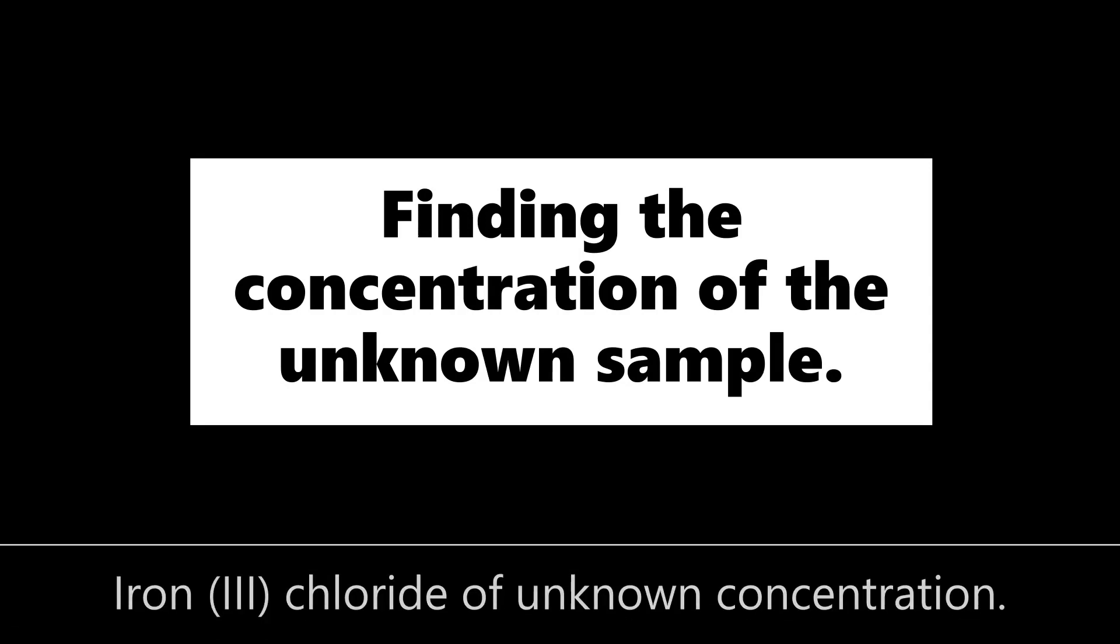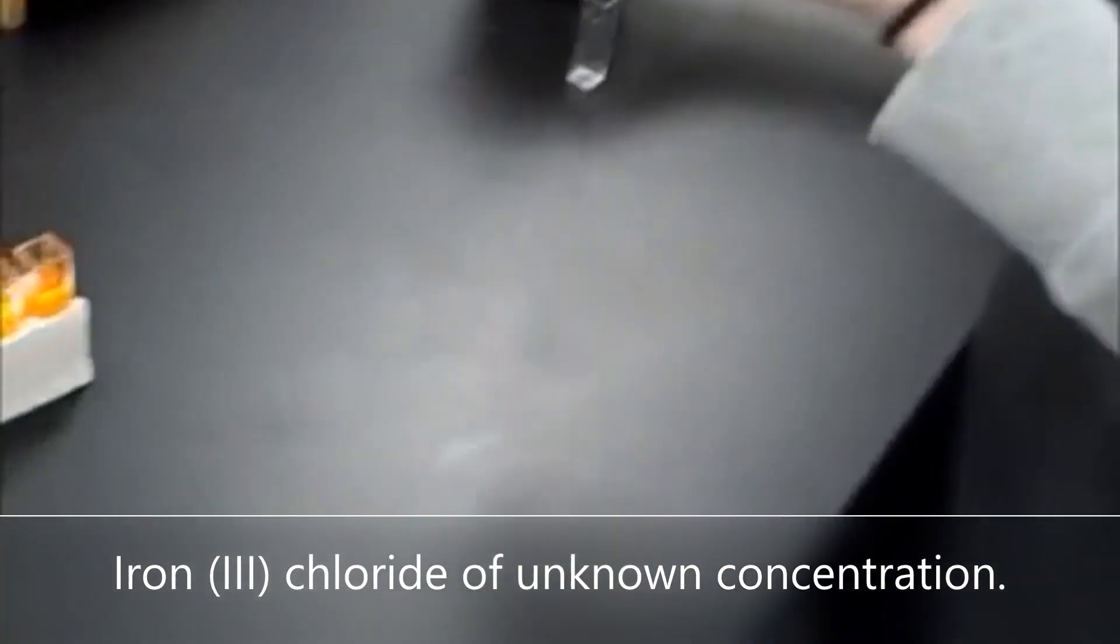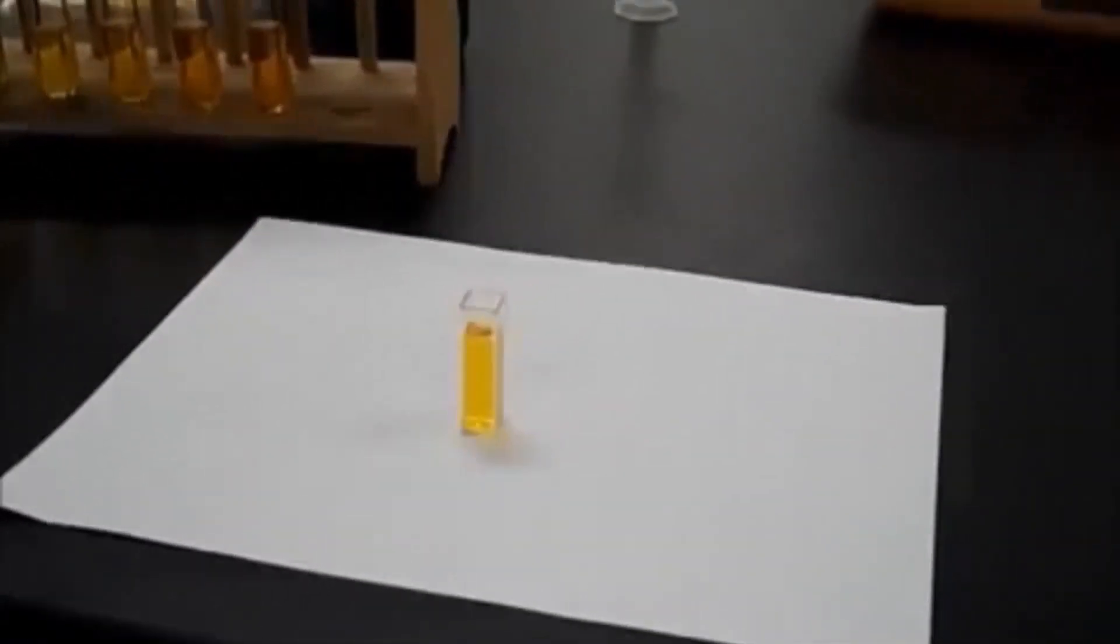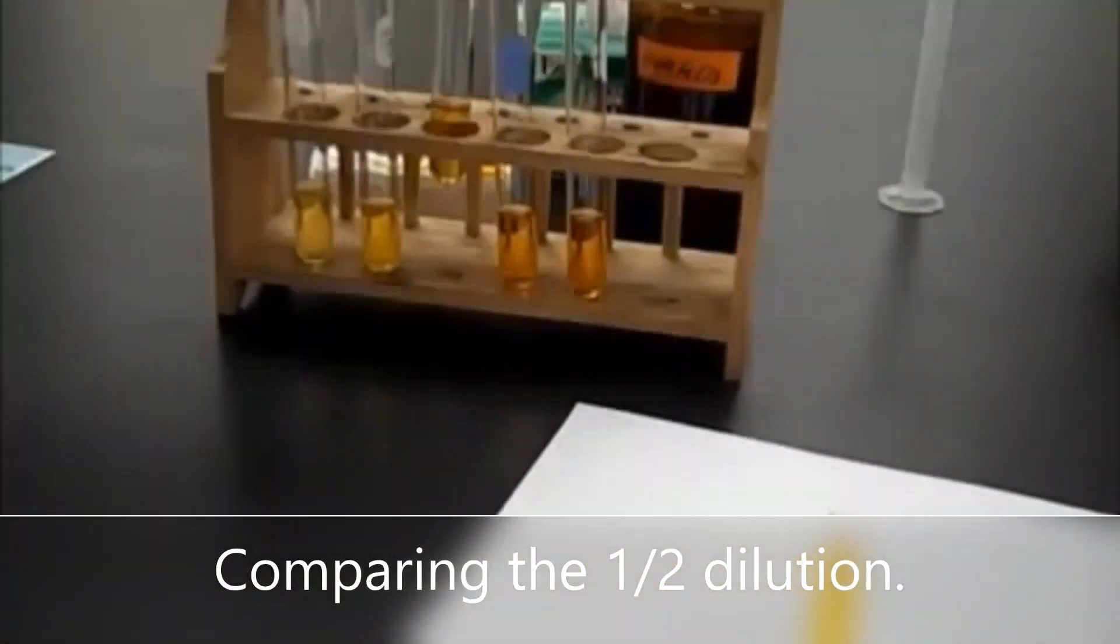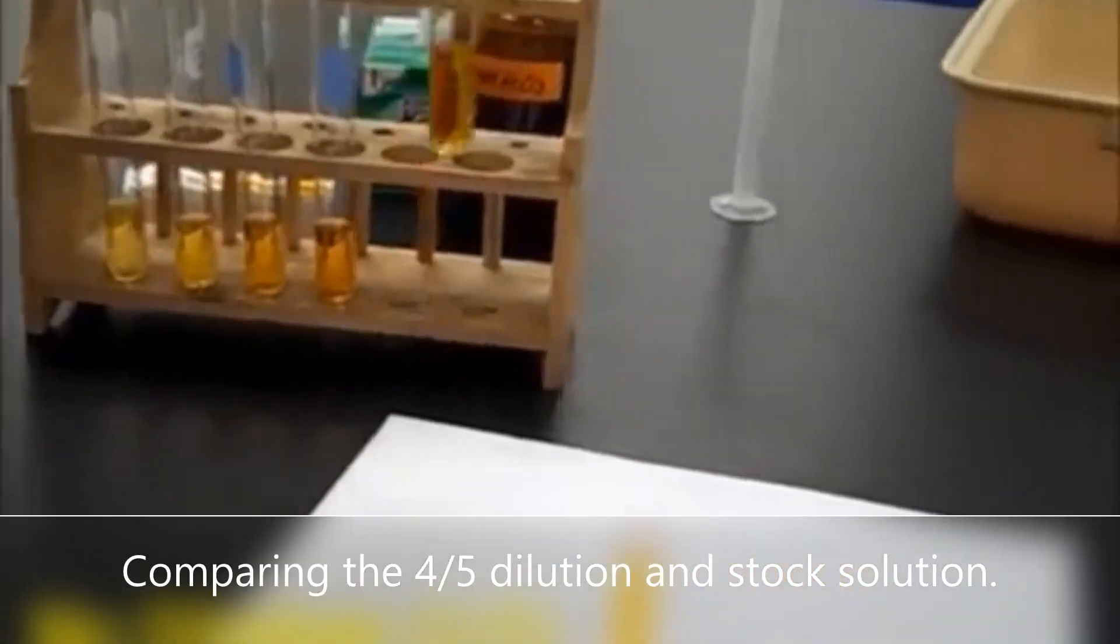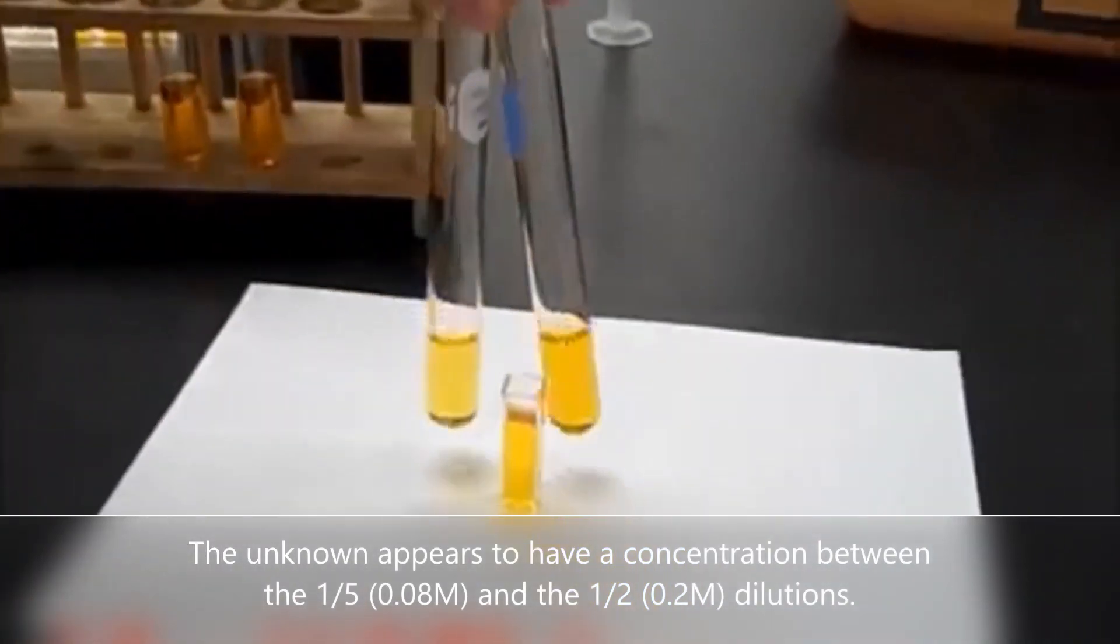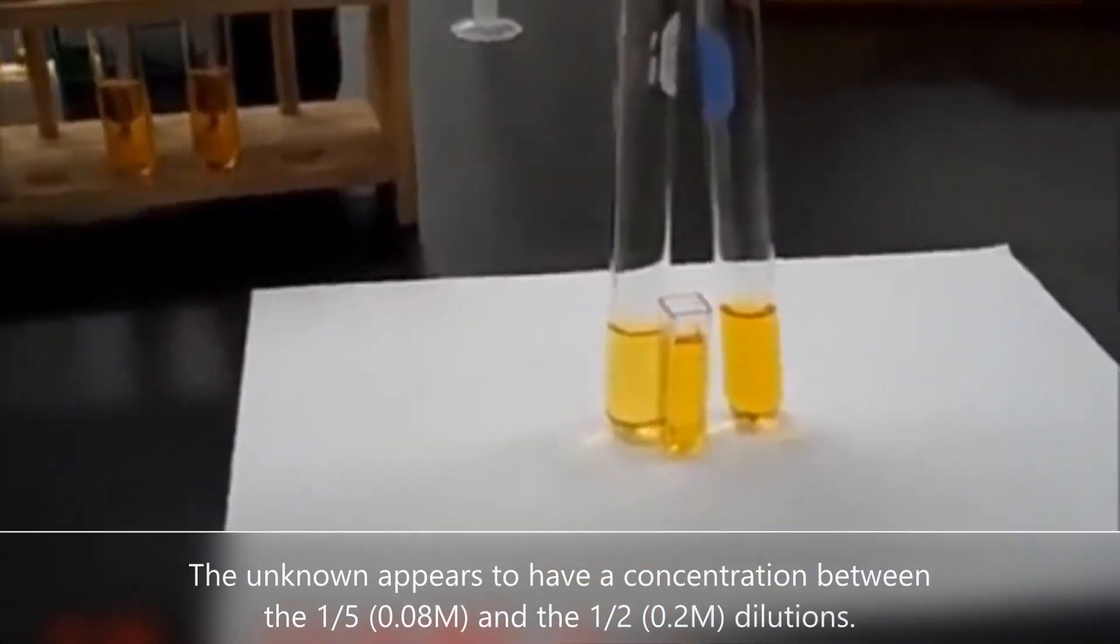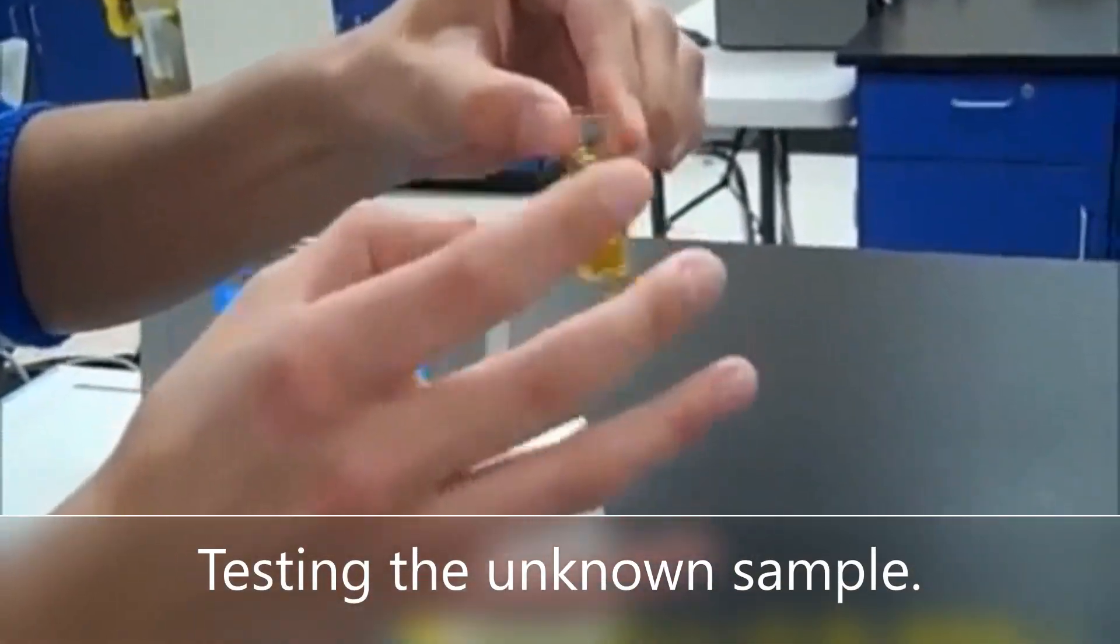Now we'll look at finding the concentration of the unknown sample. So the unknown sample of iron chloride we see here being compared to the different dilutions we created earlier. And as we do those comparisons we want to see which of the samples is the unknown solution most similar to. We see that it appears to have a concentration somewhere between the one-fifth and the one-half dilutions. This gives us a ballpark idea of the concentration for the unknown sample.